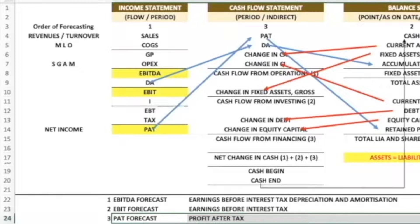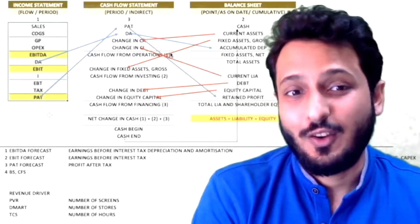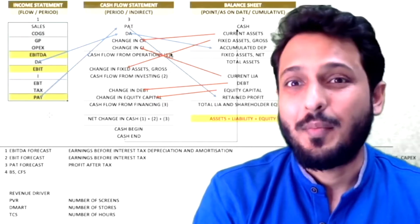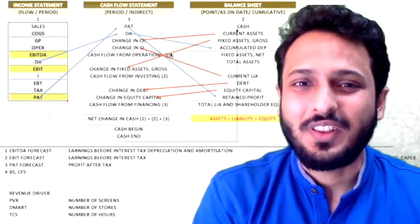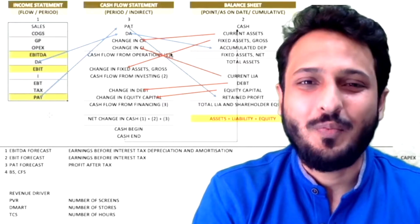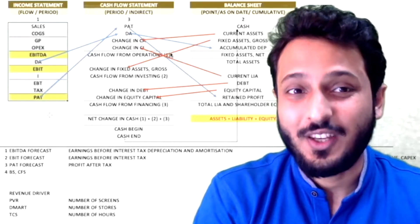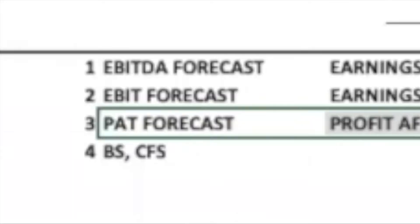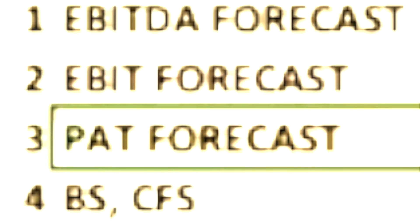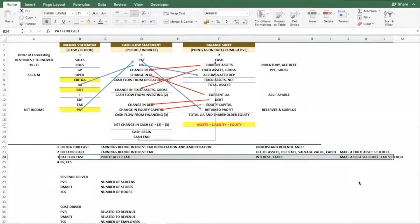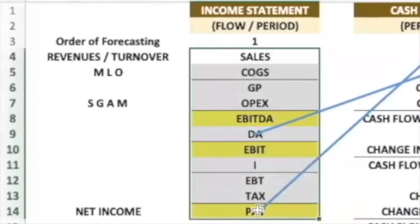With these three steps we will be able to make a profit and loss statement — the first financial statement. To recap: step one, EBITDA forecast, requires revenue and cost drivers; step two, EBIT forecast, requires depreciation and amortization; step three, profit after tax forecast, requires a debt schedule and a tax schedule. We are now done with forecasting the income statement.